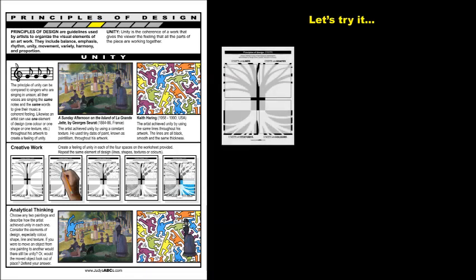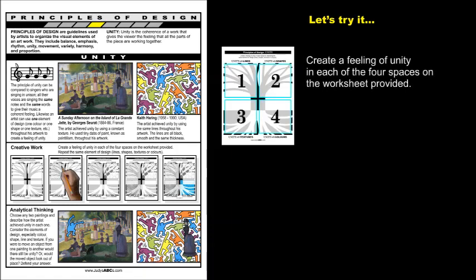Let's try it. Print the sketchbook activity page provided. A summary of the principle of unity is given. Also, print the worksheet provided. Create a feeling of unity in each of the four spaces on the worksheet provided. Repeat the same element of design: lines, shapes, textures, and colors.